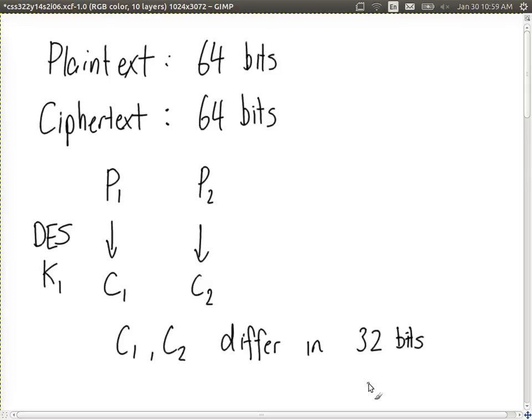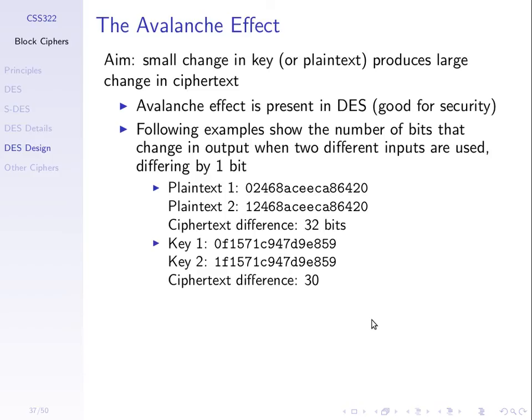The avalanche effect is a way to measure that if we take two inputs which differ by just one bit, we'd like the two outputs to differ on average by 32 bits. We can use this to measure whether the algorithm has the avalanche effect — does a small change lead to a large difference? An avalanche starts small at the top of a mountain and ends in a large impact; similarly, a small change in input bits should cause many bits to change as we apply our cipher.